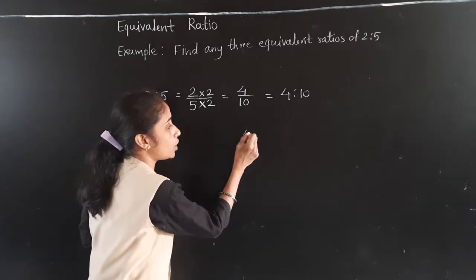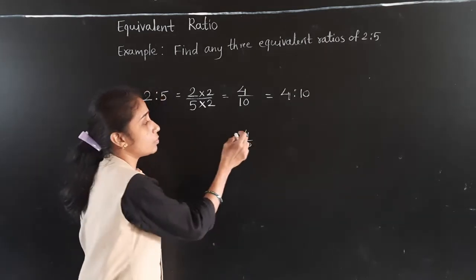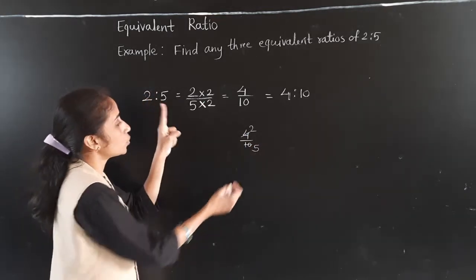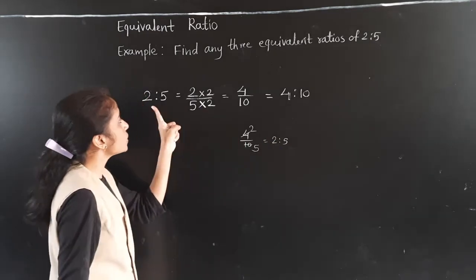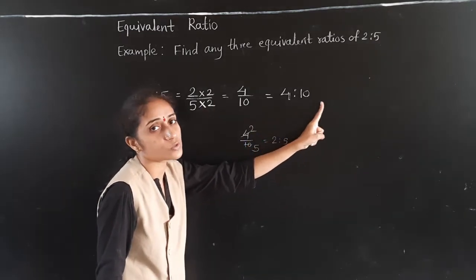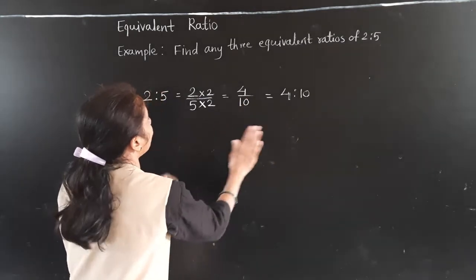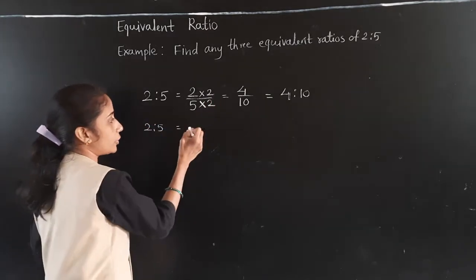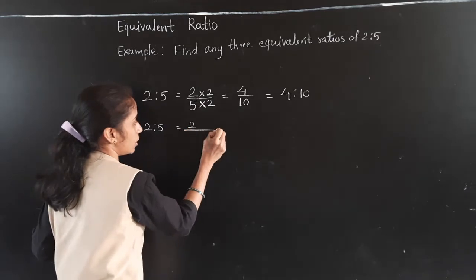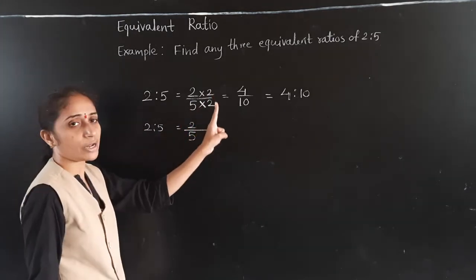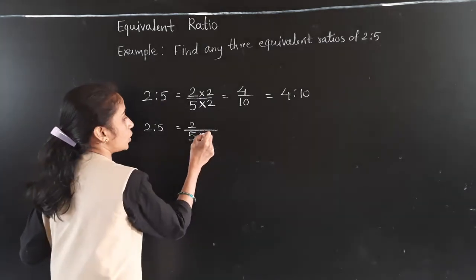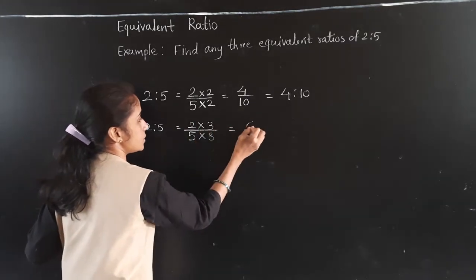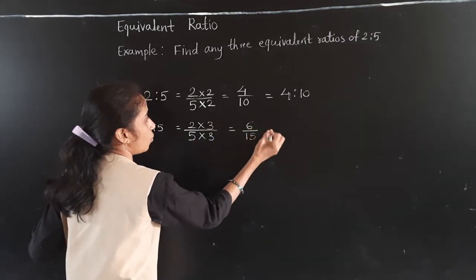4 is to 10 is an equivalent ratio for 2 is to 5. We can verify: if we simplify 4 upon 10, dividing both by 2, we get 2 is to 5. Now for the next equivalent ratio, we multiply 2 upon 5 by 3: 3 twos are 6, 5 threes are 15, so we get 6 is to 15.